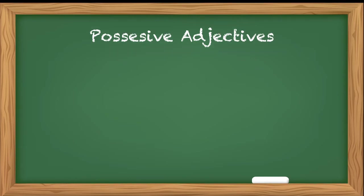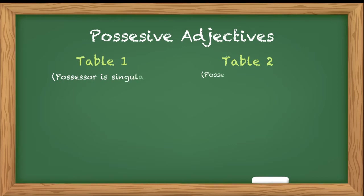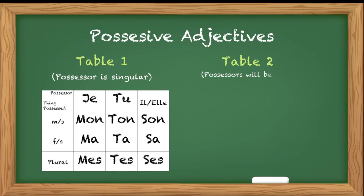We are going to cover possessive adjectives in two parts. First I will tell you table one, where the possessor is singular, and then we will do table two, where the possessors will be plural. In the table, if the possessor is je, the possessive adjective will be mon if the thing possessed is masculine singular, ma if feminine singular, and mes if plural. Similarly, if the possessor is tu, the possessive adjectives will be ton, ta, tes depending upon the gender of the thing possessed. Then if the possessor is il or elle — third person singular — possessive adjectives will be son, sa, ses.